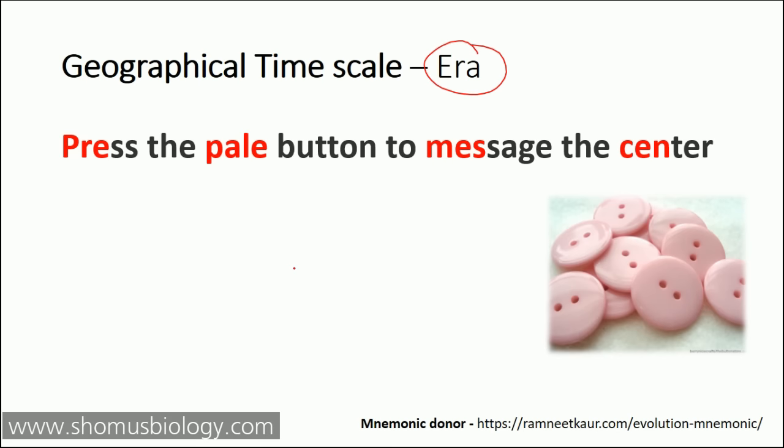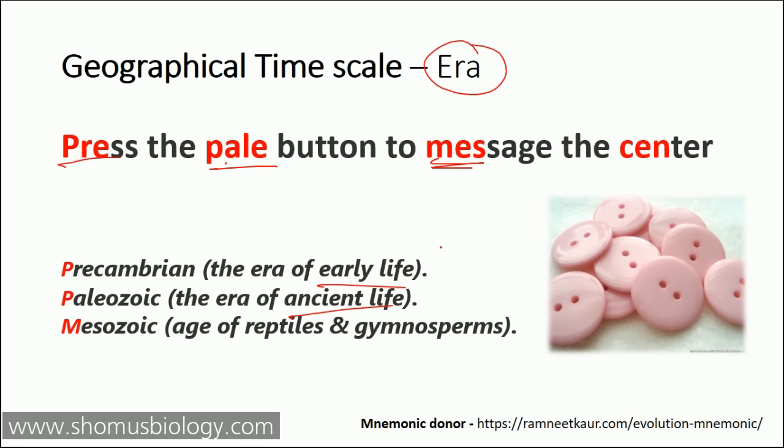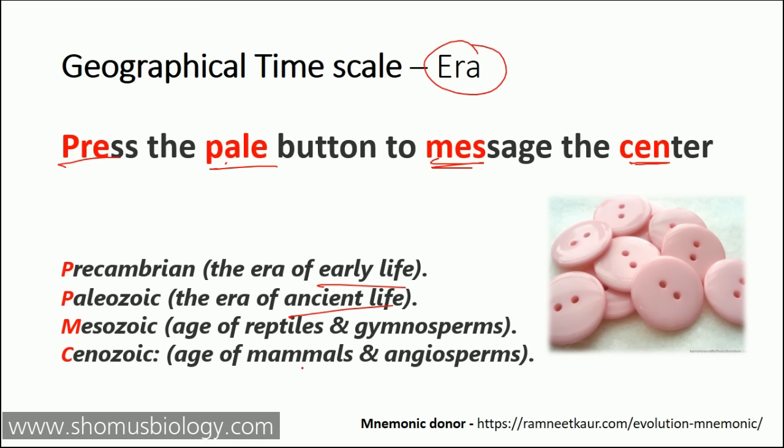The steps go like this: 'Press' gives you the Precambrian era, the first era in the early life span. 'Pill' gives you Paleozoic era, the era of ancient life. 'Mess' in 'message' gives you Mesozoic era, the age of reptiles and gymnosperms. And 'center' gives you Cenozoic era, the age of mammals and angiosperms — the era we are currently living in. We'll dig deep into the Cenozoic era to understand the periods.